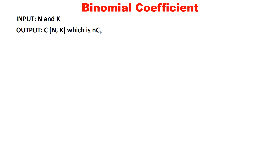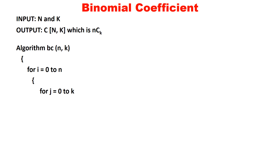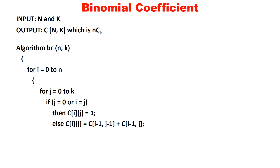Algorithm BC (Binomial Coefficient): input is n and k, output is C(n, k). For i from 0 to n, and j from 0 to k — we vary i from 0 to n and j from 0 to k to compute C(n, k). If j equals 0 or i equals j, then C[i][j] equals 1. Otherwise, C[i][j] equals C[i−1][j−1] plus C[i−1][j]. Finally, return C[n][k]. This is a very simple algorithm and the code should be straightforward to write.